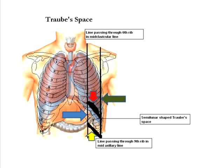To identify Traube's space, first you need to draw two lines. The first will be the mid-clavicular line — you can see the line marked by the blue arrow, which is the mid-clavicular line. Then you need to draw the mid-axillary line — the line indicated by the green arrow is the mid-axillary line.